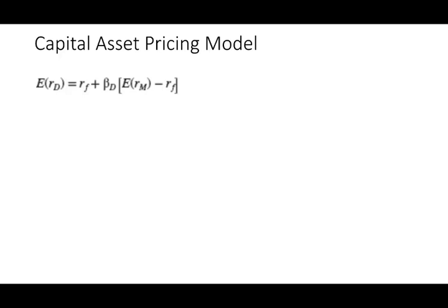To find the expected return of your stock, you take the risk-free rate plus your market risk premium, which is your expected return on the market minus the risk-free rate, and you multiply this by the beta of the stock.